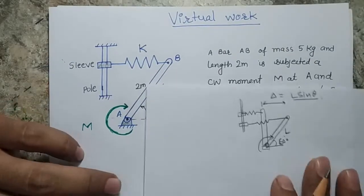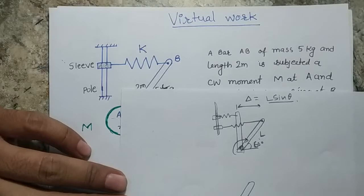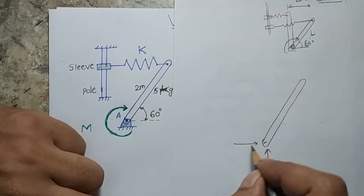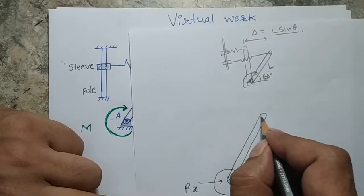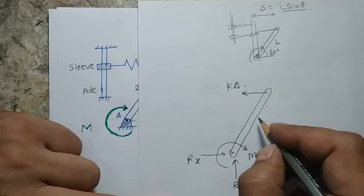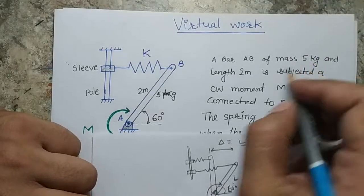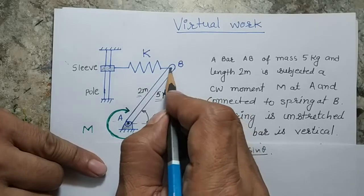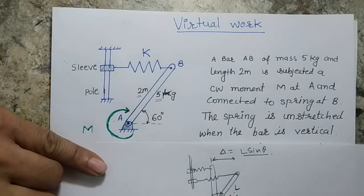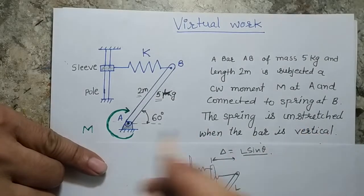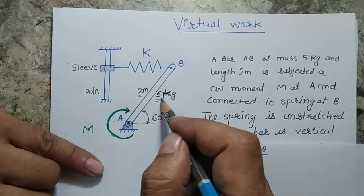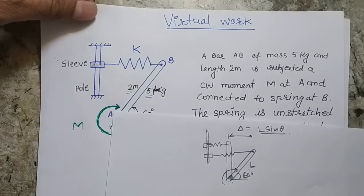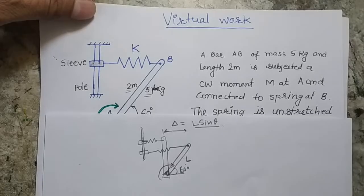Now I'll make the free body diagram of the system. The rod has several forces: the reaction force at point A — R_Y and R_X — a moment M, a spring force equal to K·δ, and a gravitational force equal to mg. The mass of the rod is 5 kg, the length is 2 m. It is a rigid rod pinned at joint A, and the spring is connected at point P. The system is in static equilibrium, and we use the principle of virtual work to find the spring constant K.